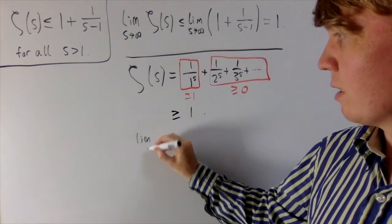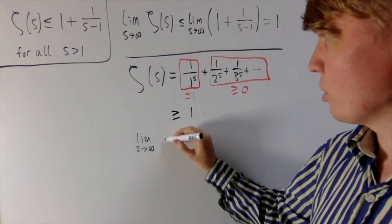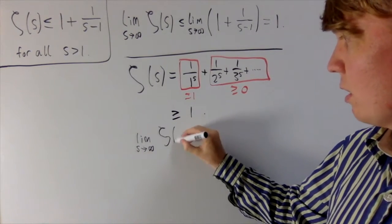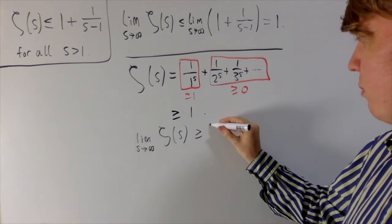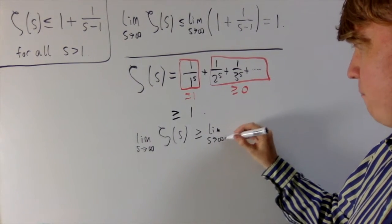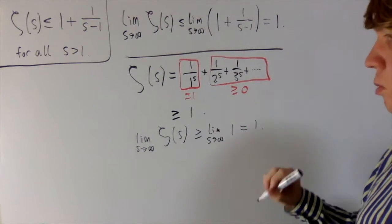And then we can apply this same sort of argument that limits preserve weak inequalities, so you get limit zeta of s is now greater than or equal to the limit as s goes to infinity of 1, which is just equal to 1.